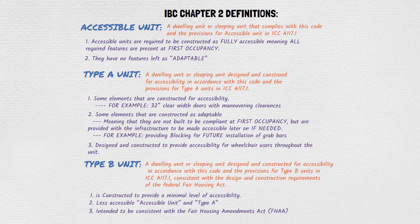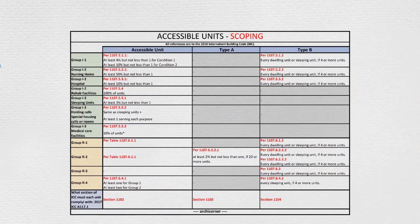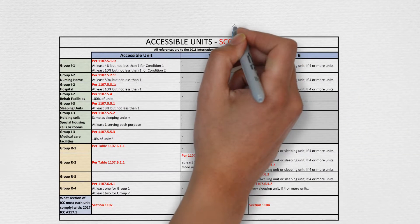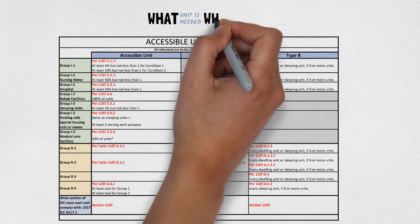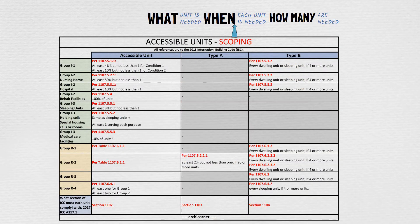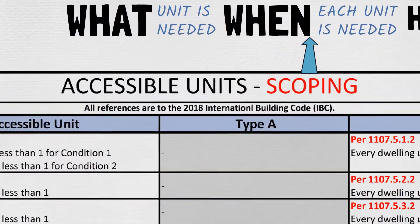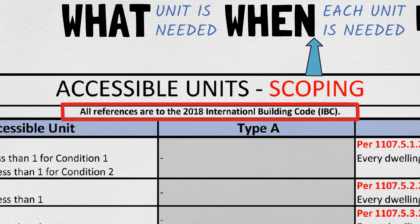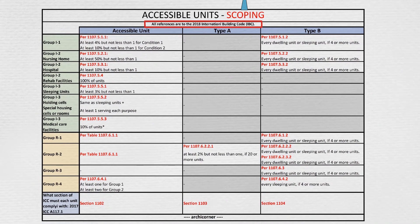I will show you a table that provides a general overview of scoping requirements. This is a breakdown of scoping — in other words, what unit is needed, when each type of unit is needed, and how many are needed. All the sections referenced in this table are per the IBC. In this table, there are three things you will notice.